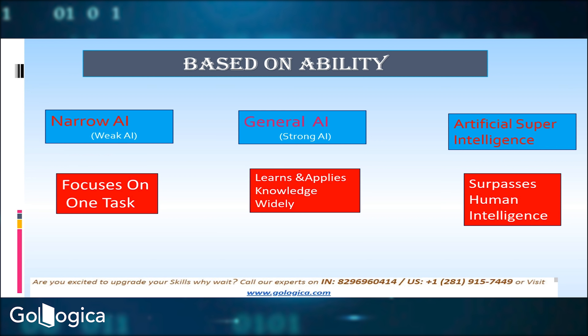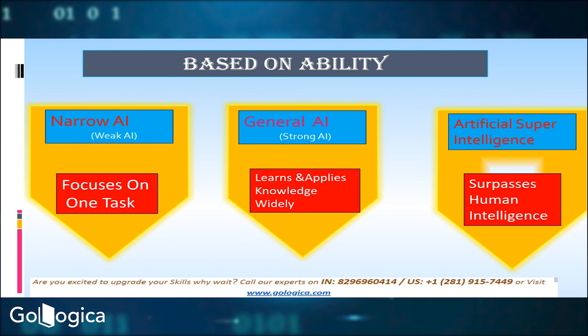AGI is more of a theoretical concept at this point, largely explored in science fiction. A general AI could potentially learn to play chess, cook a recipe, write poetry and perform a wide range of tasks, making it very flexible. The third type is artificial super intelligence. Super AI is like really smart artificial intelligence — right now it's just an idea, similar to AGI. If it's ever created, super AI would be much smarter than humans and might even understand and have its own feelings.